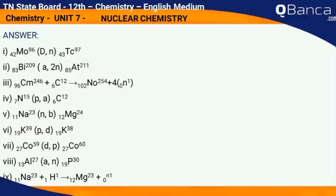v) n, b Mg-24-12, K-39-19; vi) p, d K-38-19; vii) Co-59-27, d, p Co-60-27; viii) Al-27-13, alpha, n P-30-15; ix) Na-23-11 plus H-1-1 gives Mg-23-12 plus n-0-1.